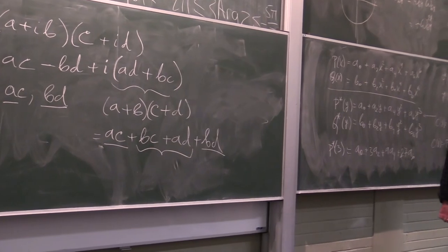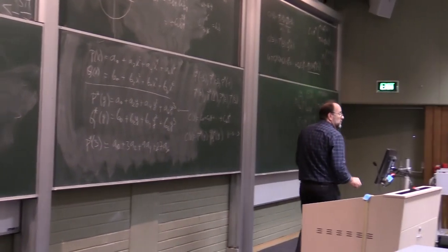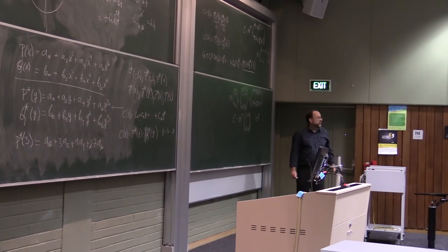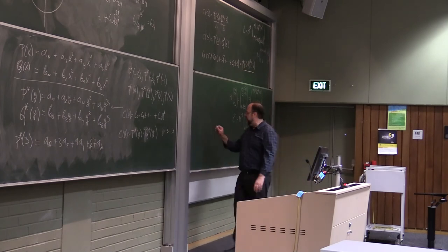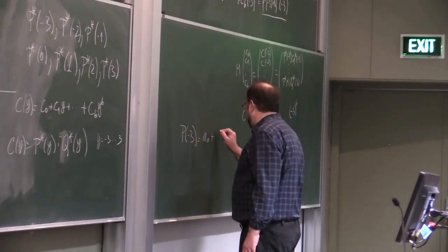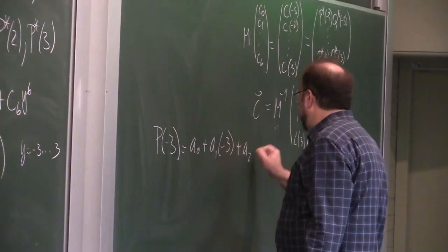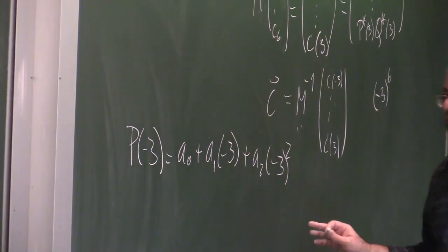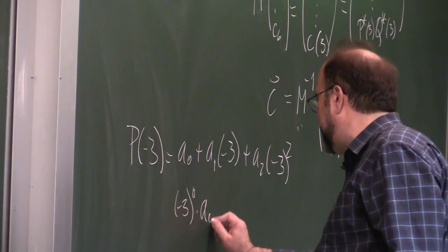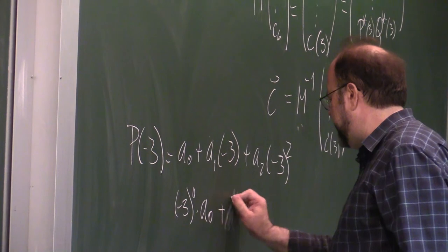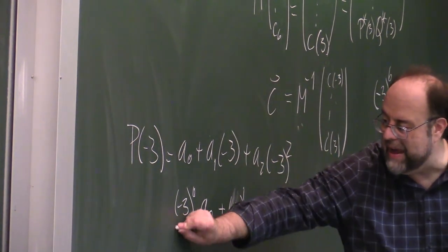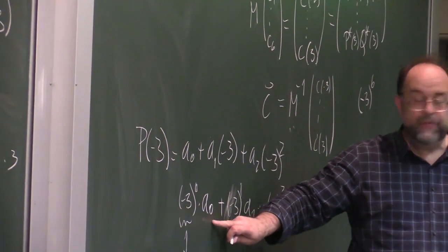Too bad you asked me that because I wanted to give you this one on the midterm — I'll cook up something else. Notice this is essentially the same trick as the polynomial approach. P*(−3) = A0 + A1·(−3) + A2·(−3)² and so forth, which equals (−3)⁰·A0 + (−3)¹·A1 + (−3)²·A2 — this is where the structure of the Vandermonde matrix comes from.